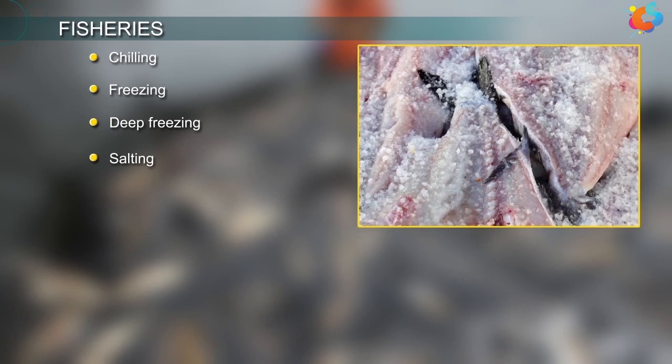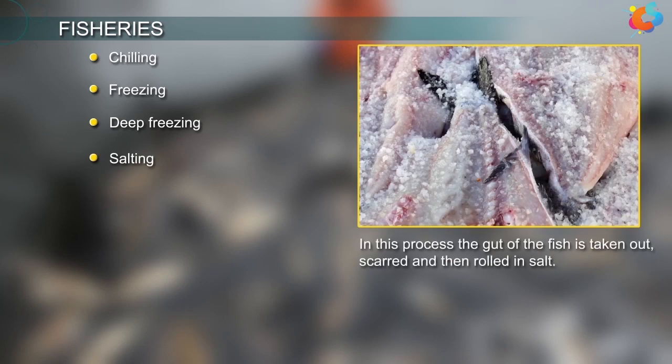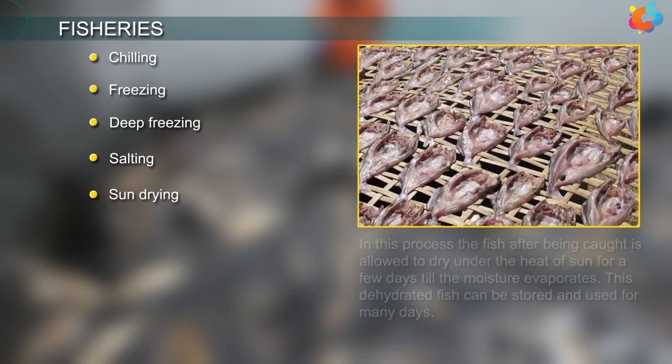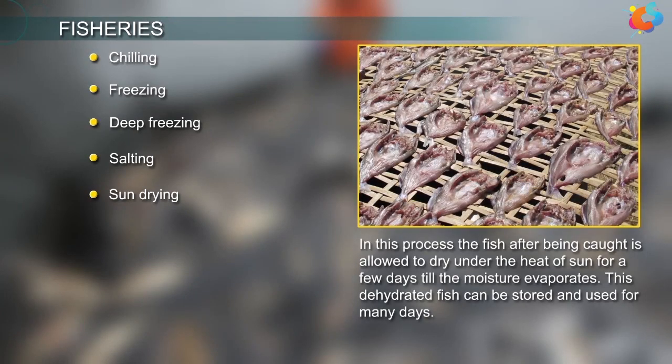Salting: In this process, the gut of the fish is taken out, scored, and then rolled in salt. Sun drying: In this process, the fish after being caught is allowed to dry under the heat of the sun for a few days till the moisture evaporates. This dehydrated fish can be stored and used for many days.